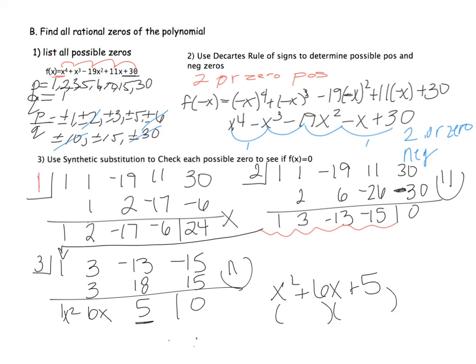What two numbers multiply to 5 and add to 6? That gives us (x + 5)(x + 1). Setting those equal to zero, my final zeros are x = −5, x = −1, x = 3, and x = 2.